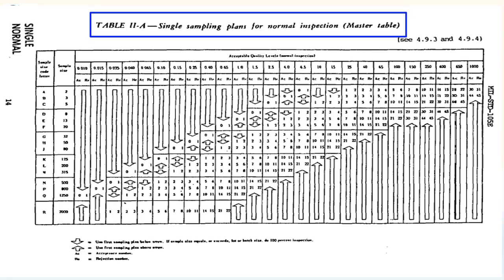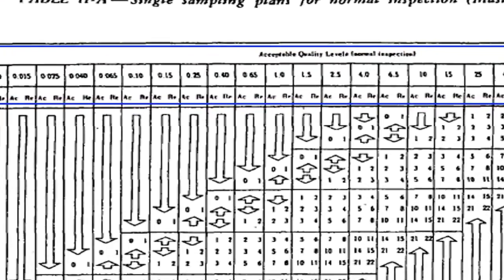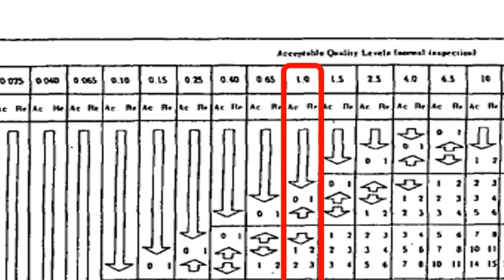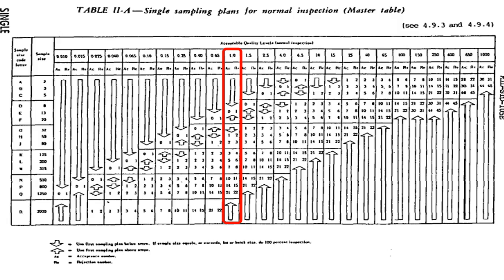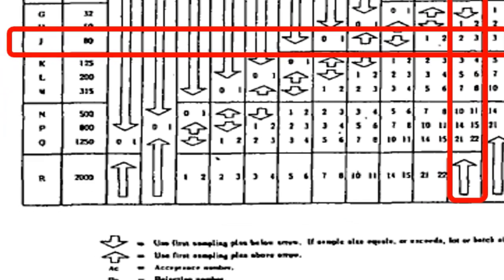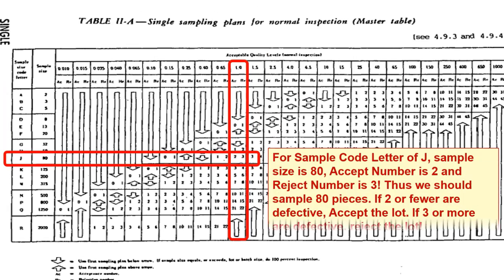Now we use the master table for single sampling plan for normal inspection. Similar tables exist for reduced and tightened inspection. In the top row, AQL is specified and we select the column corresponding to 1% AQL, then we select the row corresponding to sample code letter J. For sample code letter J, sample size is specified as 80. Accept number is 2 and reject number is 3. Thus, we should sample 80 pieces. If 2 or fewer are defective, accept the lot. If 3 or more are defective, reject the lot.